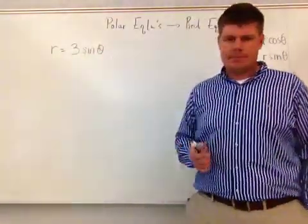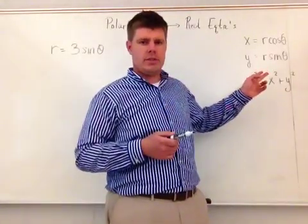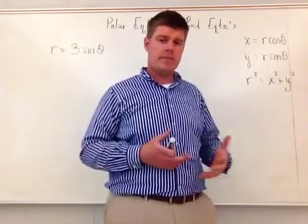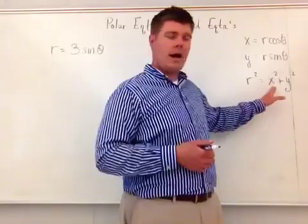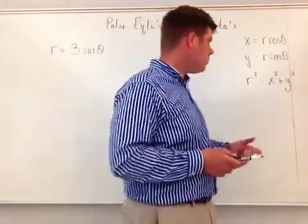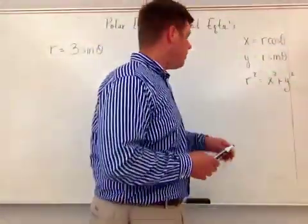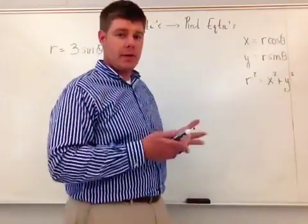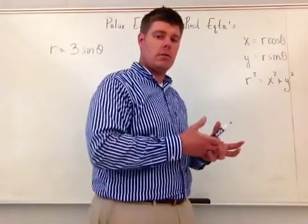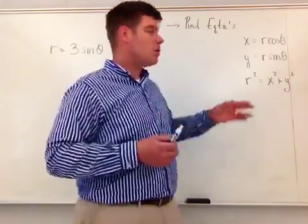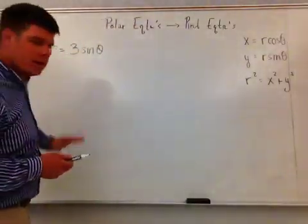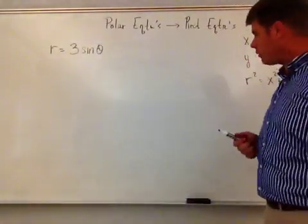So what I have here is r equals 3 sine theta. Over here to the left is some basic information you need to know: r squared equals x squared plus y squared, which is the basic equation for a circle centered at zero. Also, y equals r sine theta (since sine theta equals y over r), and x equals r cosine theta (since cosine theta equals x over r). Those relationships are key to this conversion.